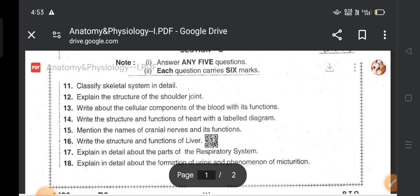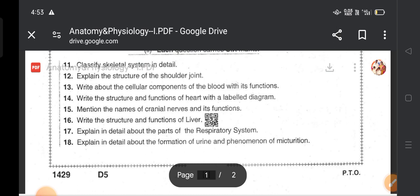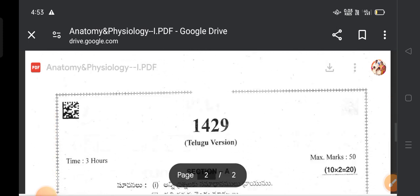Next, coming to the Section B questions. Classify skeletal system in detail. Explain the structure of the shoulder joint. Write about the cellular components of the blood with its functions. Write the structure and functions of the heart with a labeled diagram. Mention the names of the cranial nerves and its functions. Write the structure and functions of the liver. Explain in detail about the parts of the respiratory system. Explain in detail about the formation of urine and phenomenon of micturition.